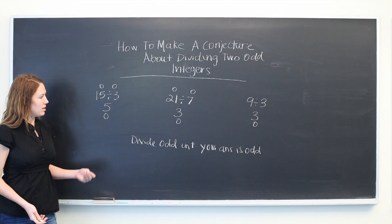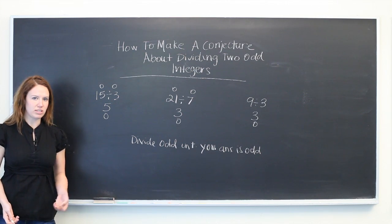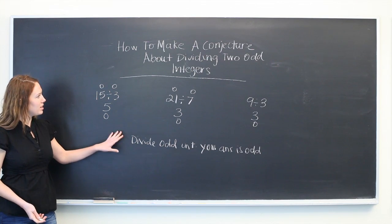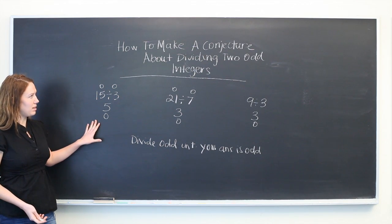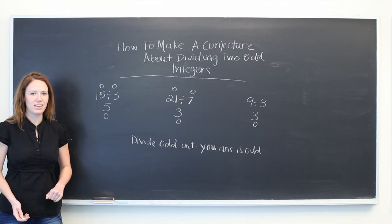So this type of problem where you need to find a conjecture actually takes a good amount of time and trial and error. But here is the first step in making a conjecture about dividing two odd integers. Thanks for watching.